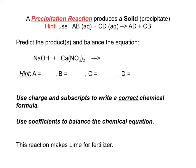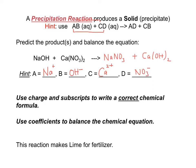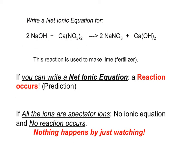In a double replacement reaction, compound AB reacts with compound CD. A combines with D to form one product, and C combines with B to form the second product. For this reaction, the products and the balanced chemical equation with coefficients are shown. We did this reaction on paper, but does this reaction really occur? We can predict that this reaction occurs if we can write a net ionic equation.